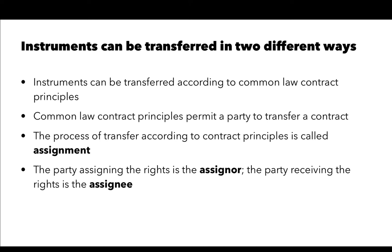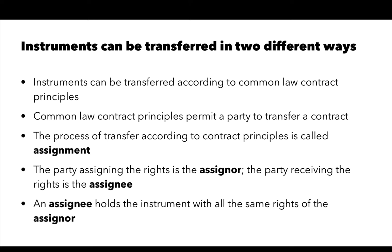In an assignment, the party assigning the rights is called the assignor. The party receiving the rights is the assignee. An assignee holds the instrument with all the same rights as the assignor. Whatever rights the assignor had are transferred to the assignee — no additional rights are going to be transferred. This is under general contract principles.